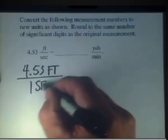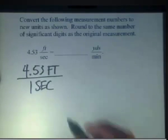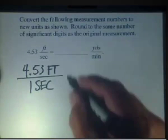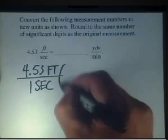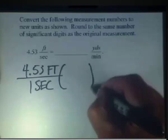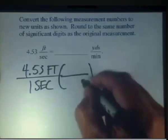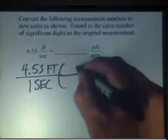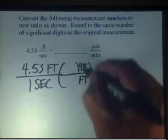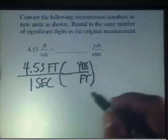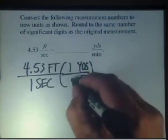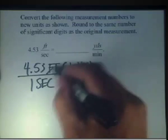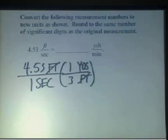In this example, we need to use two unity fractions. Let's start with the first one: let's convert the feet to yards. To get the feet to cancel, we're going to go opposite, and what we want to end up with is yards. We know that in one yard there are 3 feet, and that addresses the yards issue.